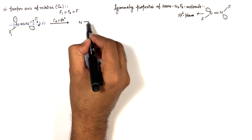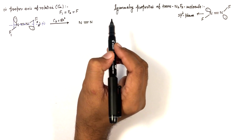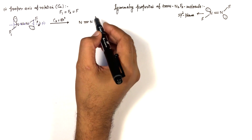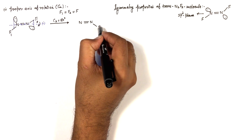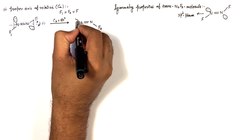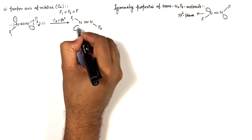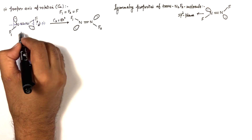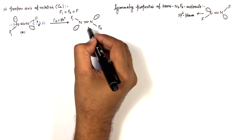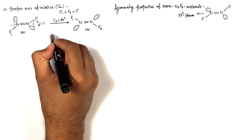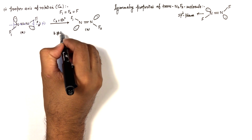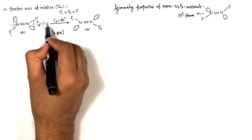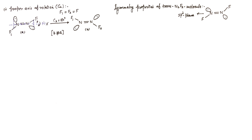After the C2 rotation by 180 degrees about axis 1, we get a new configuration B. When we compare configuration B with the original configuration A, we find that B is not equivalent to A. So axis number 1 is not a proper axis of rotation.